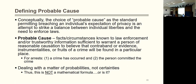Conceptually, probable cause is the standard for committing a breach of an individual's expectation of privacy. Assuming we pass the CATS test — there is a reasonable expectation of privacy — in order to violate that expectation and conduct a search, we need probable cause. The Fourth Amendment standard balances individual liberties against the state's security interests: what protects your rights the most while keeping society safe.